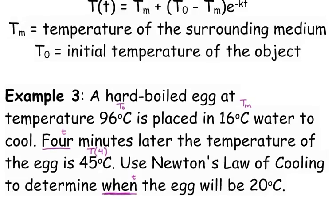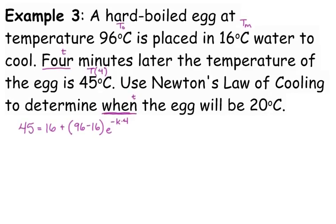Let's plug these pieces into our model and see what we're looking at. 45 degrees Celsius is the T(4) right now. T sub m is 16 plus T sub 0 is 96 minus T sub m, 16, e to the negative k—we don't know k—times t right now, that is 4. This is nice. We only have one variable. Let me simplify this a little bit before we start solving. 96 minus 16 is 80, and I'm just going to rewrite that as negative 4k in the exponent.